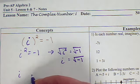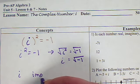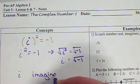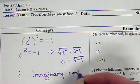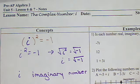i is called an imaginary number. It's not a real number. Mathematicians made it up. It is an imaginary number.